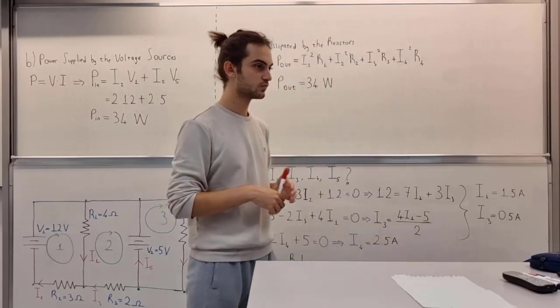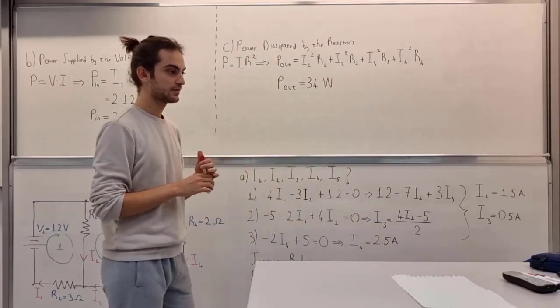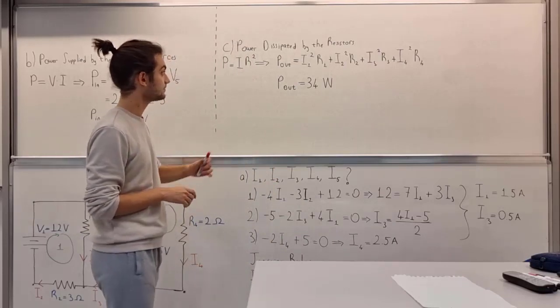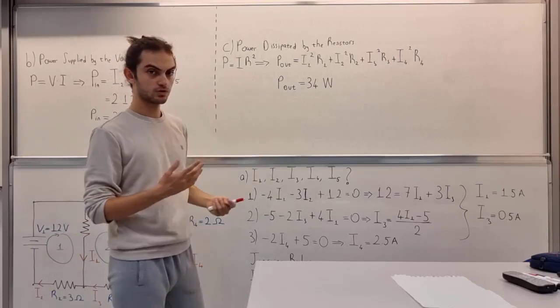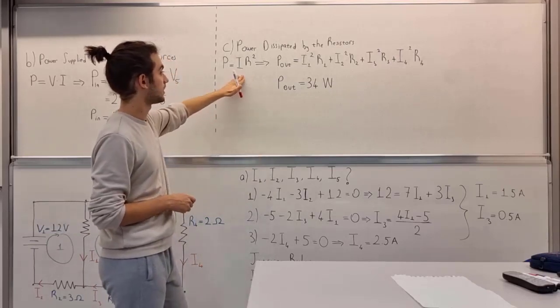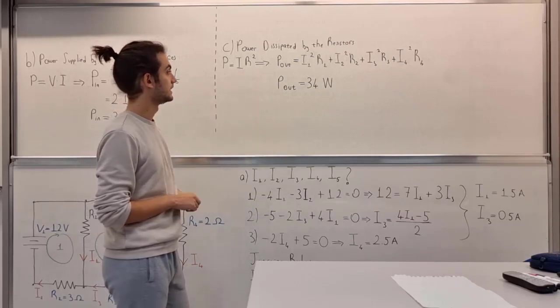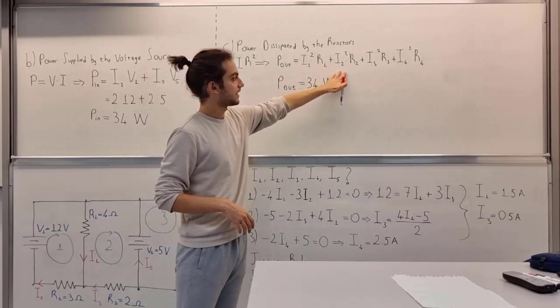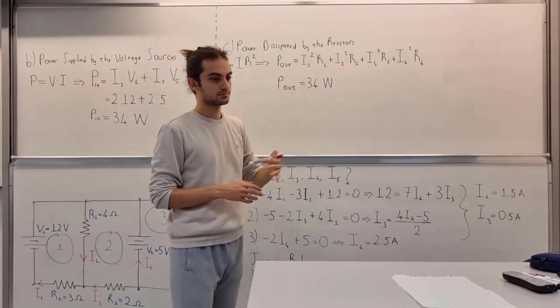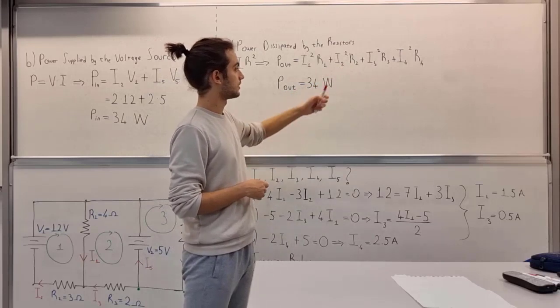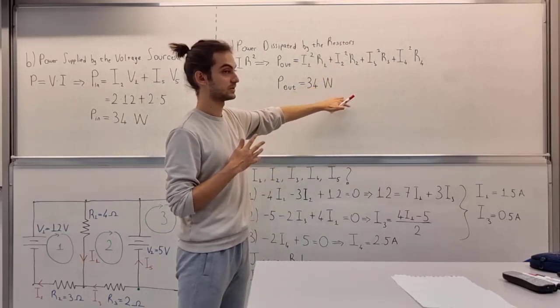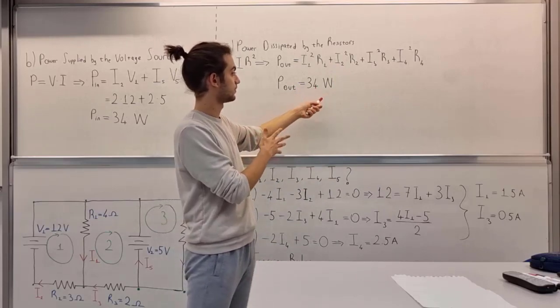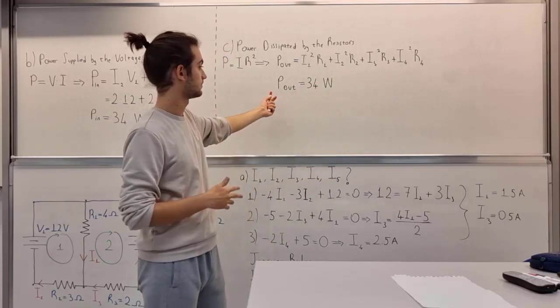In option C, we're going to find the power dissipated by the resistors. For the resistors, we have power formula I²R. Then we simply need to add up all the powers, all the resistors' powers. If you calculate this, we attain 34 watts as the power out.